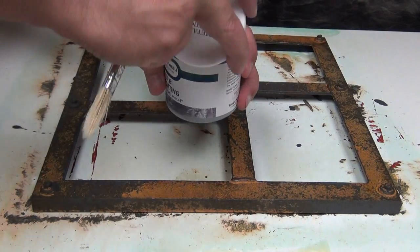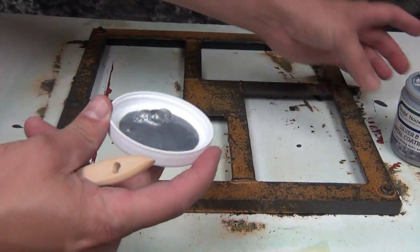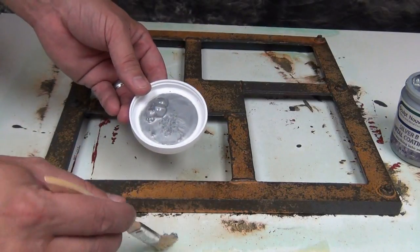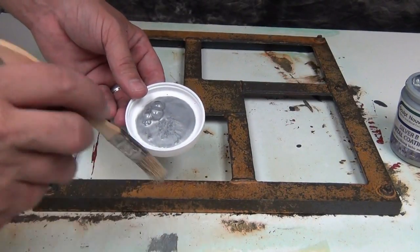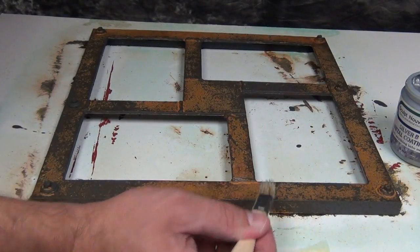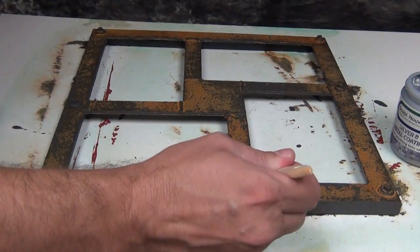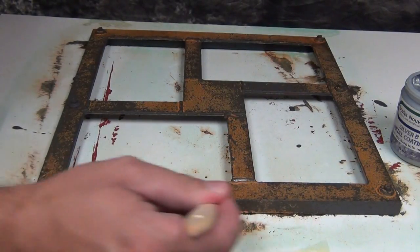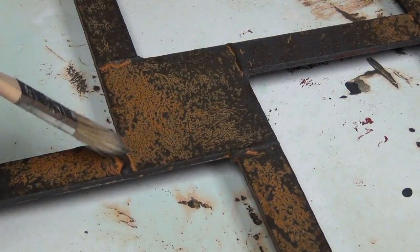To finish this out, we're going to add some Silver B to some critical areas. What the Silver B will do is create the effect of bare raw metal showing back through the rust, but we're actually doing that in reverse—putting the silver over the top. We're going to very carefully dry brush that in some key areas where you would naturally have abrasion occurring.